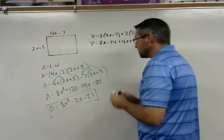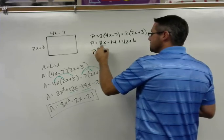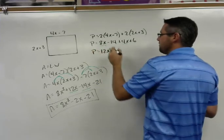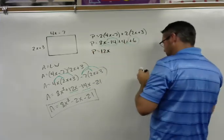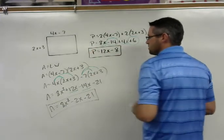And then we'll combine like terms. So 8x plus 4x is going to be 12x. And then the negative 14 and the positive 6 is going to be negative 8. And so there is our perimeter expression.